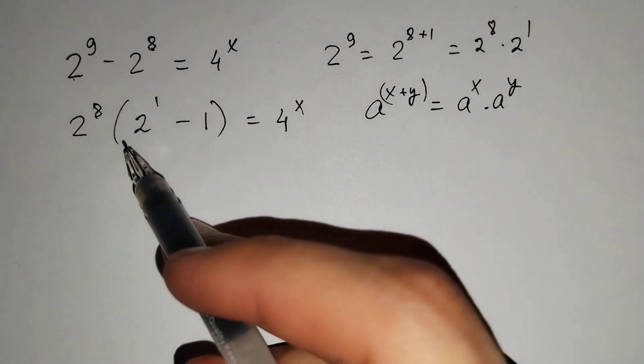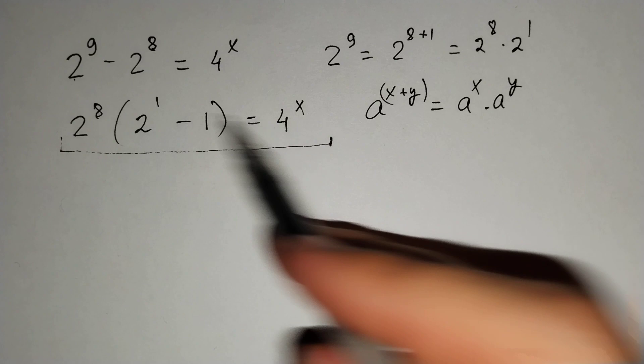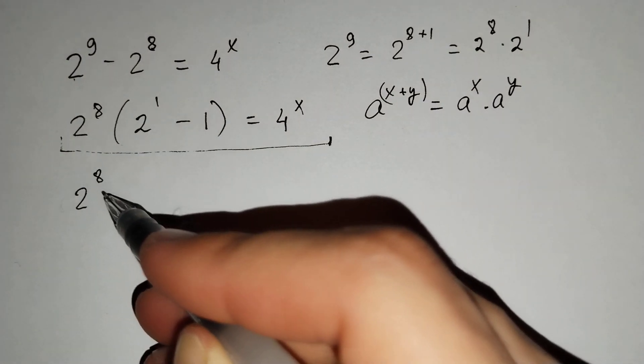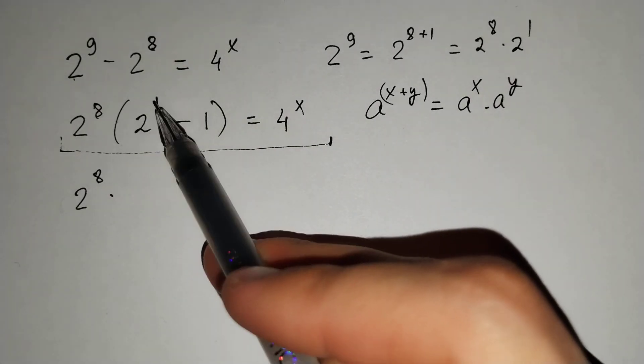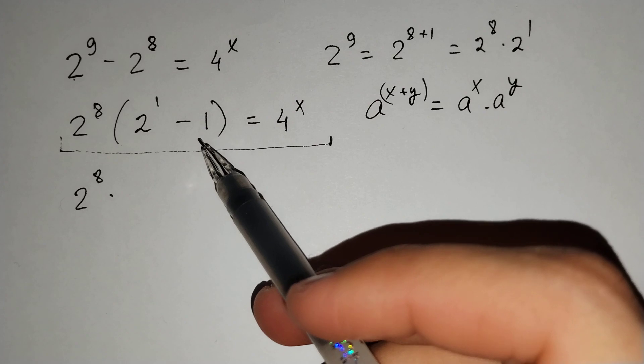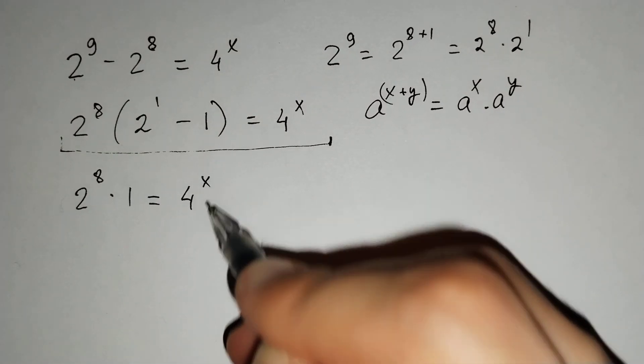And let's put it here. And it does this one. And here 2 power 8 times 2 power 1 equals 2, and 2 minus 1 equals 1. Times 1 equals 4 power x.